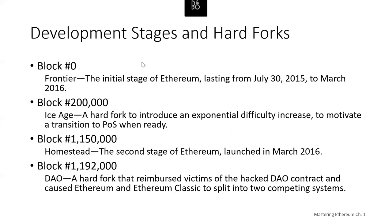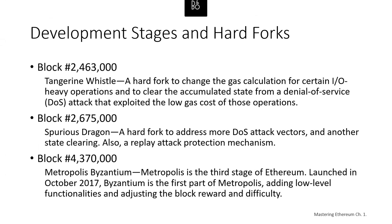Block zero is the initial stage — the Frontier stage — lasting from 2015 to 2016. Ice Age was a hard fork to introduce an exponential difficulty increase. Homestead is a stage of Ethereum launched in March 2016. Around block 1,192,000 they had a hard fork for the DAO, which I'll talk about in a subsequent video — the DAO was a hard fork that reimbursed victims of the hacked DAO contract, and it also caused Ethereum and Ethereum Classic to split into competing systems. Tangerine Whistle was a hard fork to change the gas calculation for IO-heavy operations. Spurious Dragon was a hard fork to address some denial-of-service attack vectors, and also a replay attack protection mechanism.